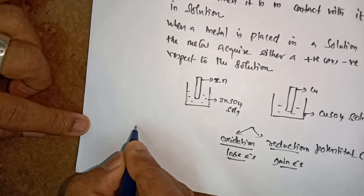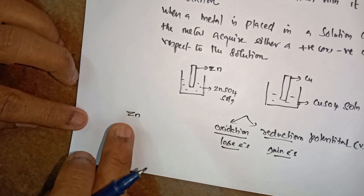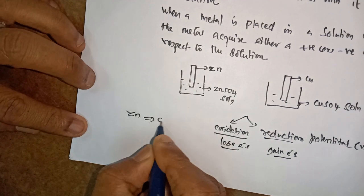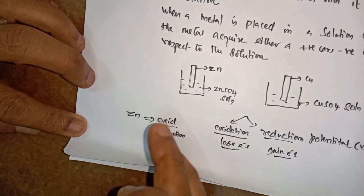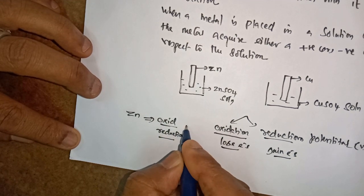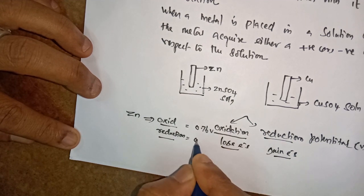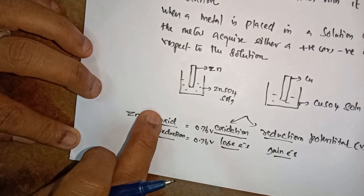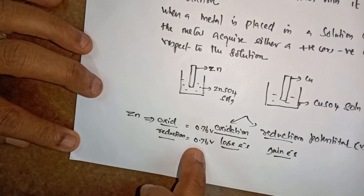Suppose I take here zinc metal — a zinc electrode. For this, I measure the oxidation potential as well as the reduction potential. For the same metal, under the same condition, I measure oxidation and reduction potential. Both these values have the same magnitude. The value is 0.76 volt for oxidation potential and also 0.76 volt for reduction potential. The magnitude of the values remains the same.